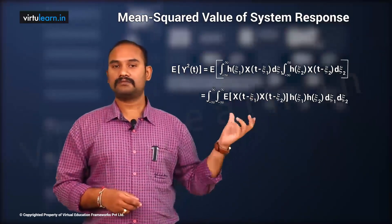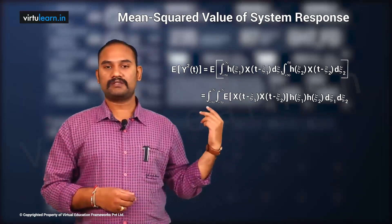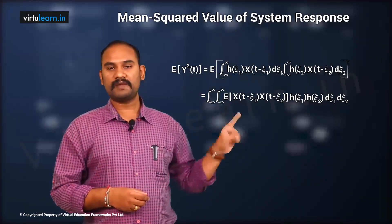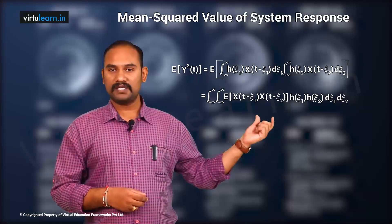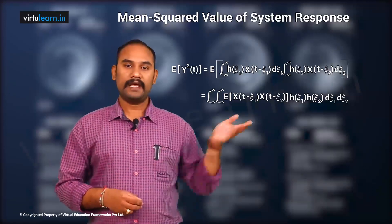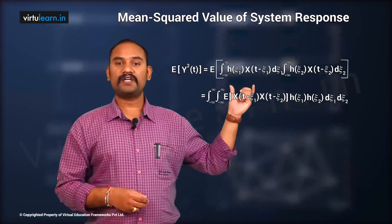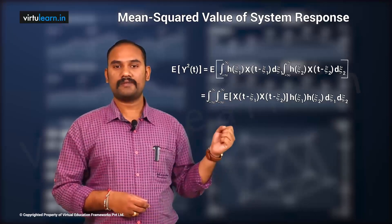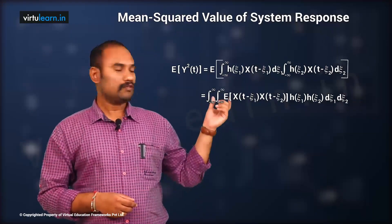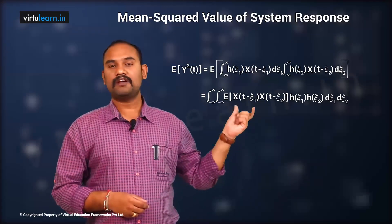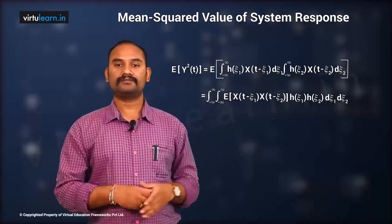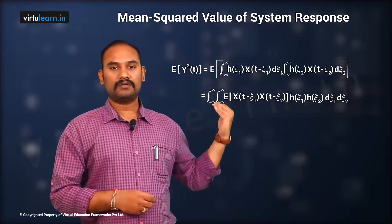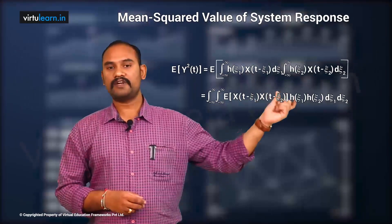With two integrals — y(t) · y(t) = y²(t) — we combine them into a double integral: ∫∫ E[x(t − ζ₁) · x(t − ζ₂)] · h(ζ₁) · h(ζ₂) dζ₁ dζ₂. In the first integral we have x(t − ζ₁) and in the second x(t − ζ₂), which is the same random process with different shifts.